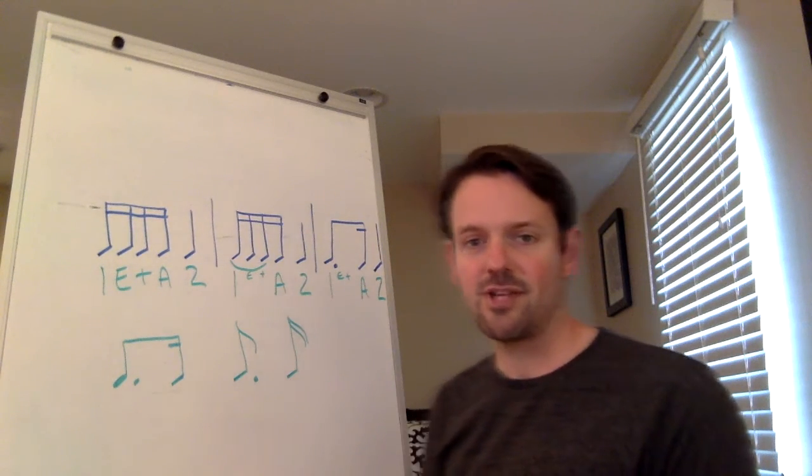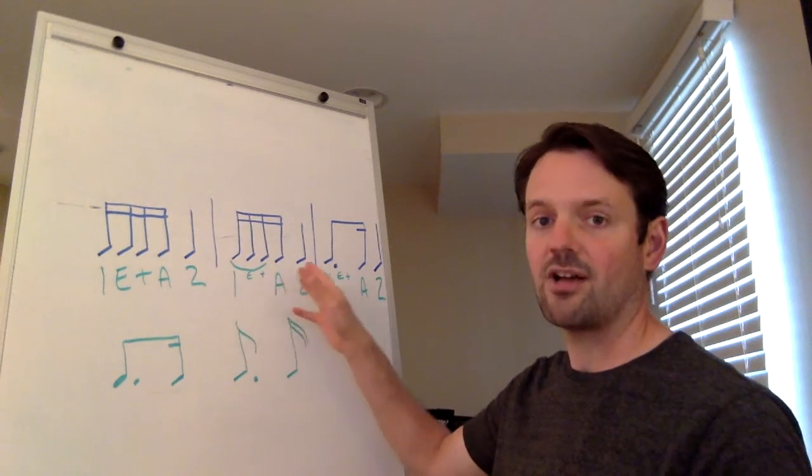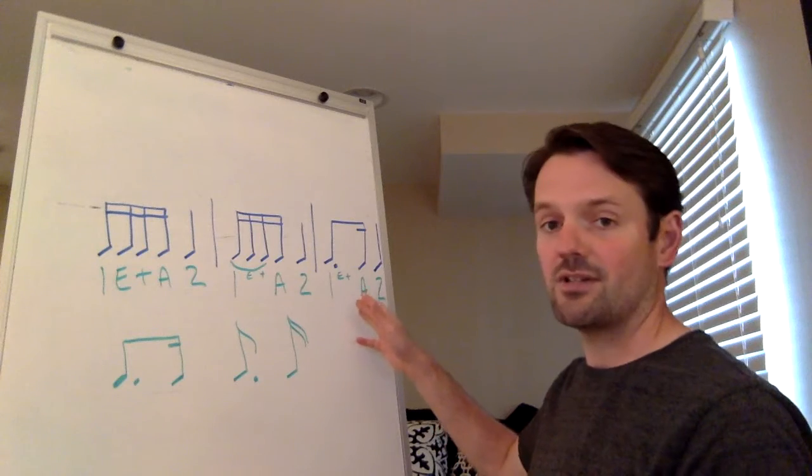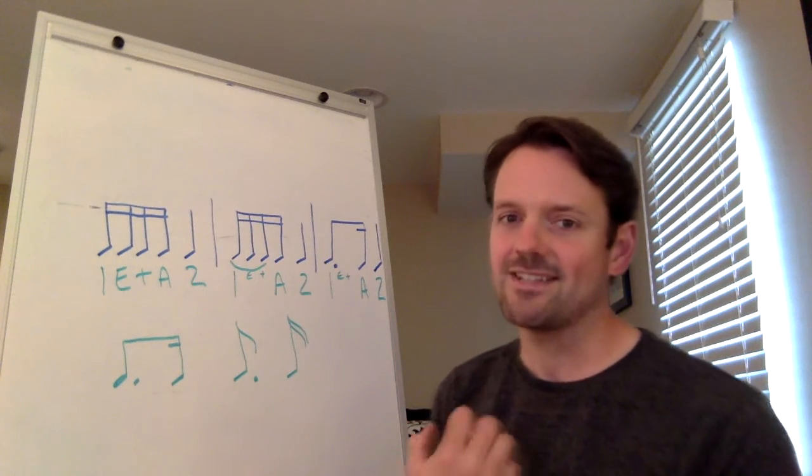So, when you count these three measures, you get one, e, and, uh, two. One, uh, two. One, uh, two.